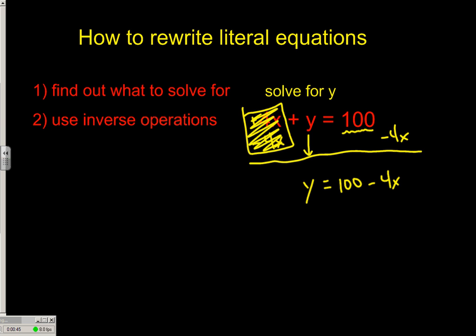As soon as you see that you have the variable that you wanted — we wanted the y all by itself — here it is: y equals 100 minus 4x. So we've rewritten the literal equation, and now you're free to move on to the next problem.